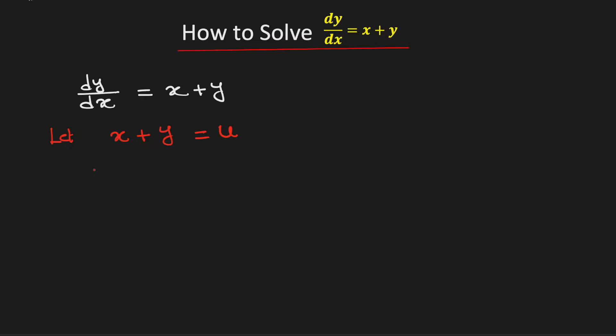Now differentiating both sides with respect to x, we get that 1 plus dy/dx equals du/dx. That is, dy/dx equals du/dx minus 1.